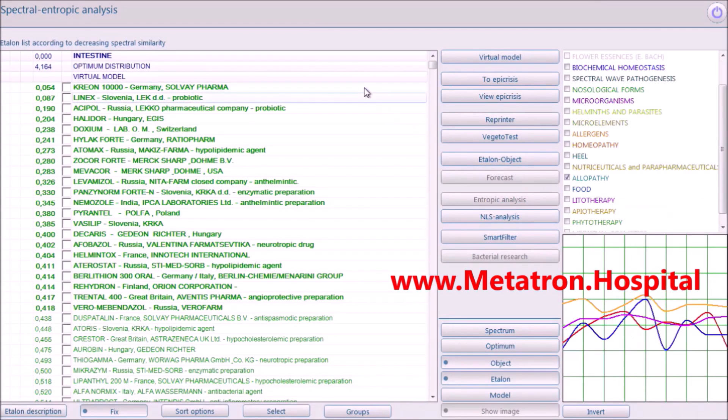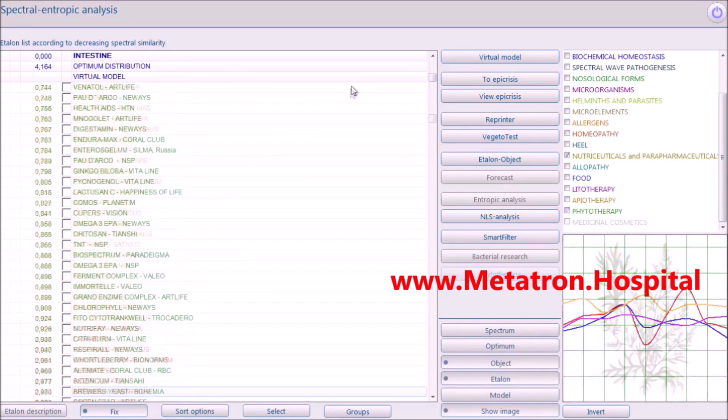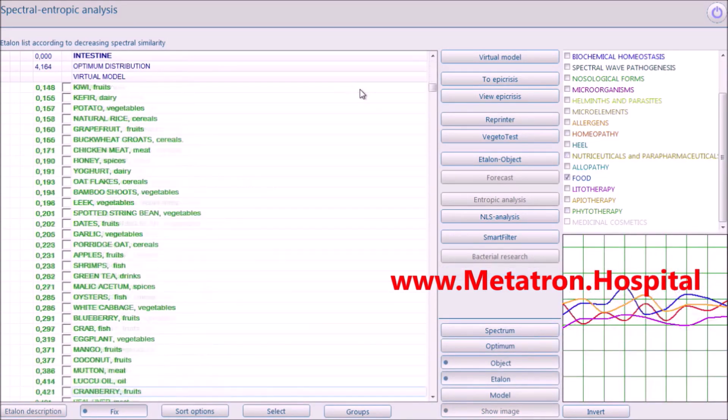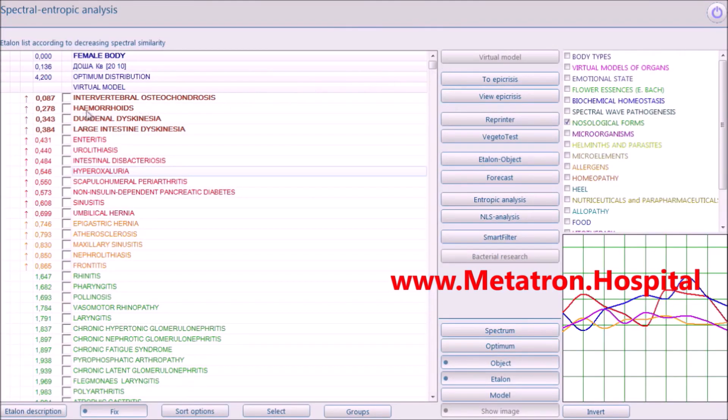Metatron Remote can be applied at any distance using the client information, which is used as a medium for quantum link between the Metatron device and the client. This was referred to as instantaneous action at a distance by Einstein. Modern physicists named it quantum entanglement.